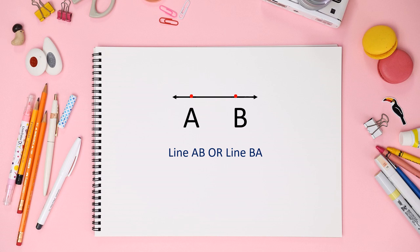When we write it, we put a line sign above AB or BA. Another way to represent a line is by writing a small letter alphabet beside it, and we call it 'line m'.